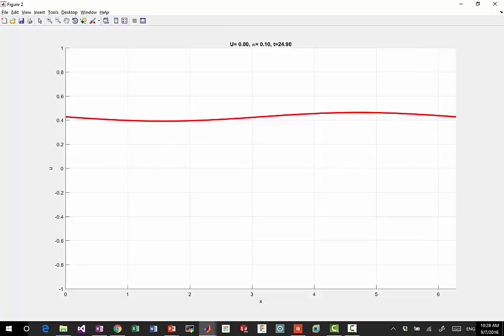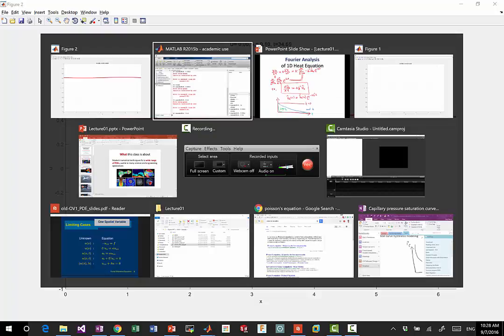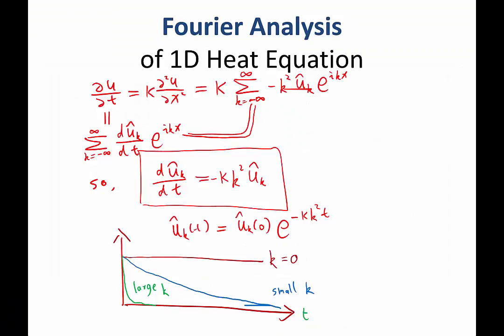And even that slowly decays. At the end, we are going to see it's going to be a constant in space. So that is the behavior of the heat equation in periodic domains. All right. Any questions?